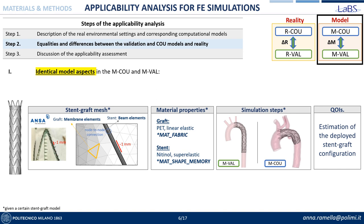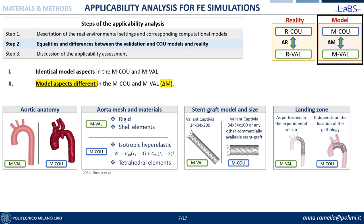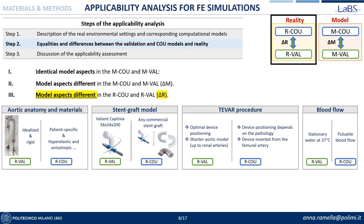The second step consists of describing the qualities and differences between the reality and the models. The identical aspects on the model side are related to the stent graft discretization technique and material properties, the steps of the simulations, and the question of interest. While on the other side, differences are related to the aortic anatomy, to the kind of material and discretization technique of the aorta, to the stent graft size, and to the landing zone of the implanted stent graft. Switching from the model to the real environmental settings, differences are related to the aortic anatomy and materials, to the stent graft model, to the TEVAR procedure itself, and to the presence or absence of blood flow.